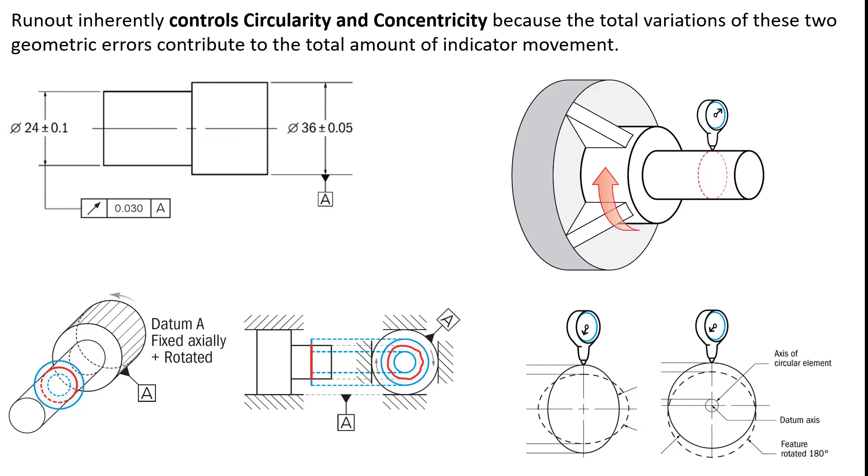The difference now is that we don't have the diameter symbol here because runout is a surface control, whereas concentricity uses the derived median points and we have a cylindrical tolerance zone about the axis perfectly aligned and oriented. Now we have these two circles. You can see them clearly down here on this view—the blue one on the outside and on the inside.